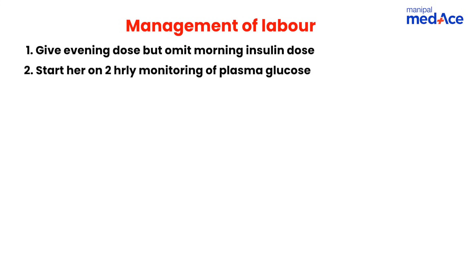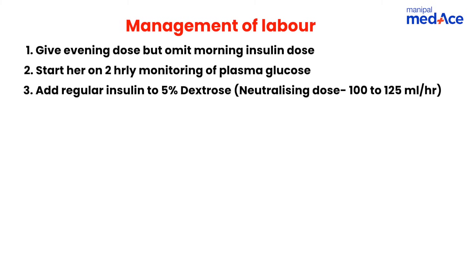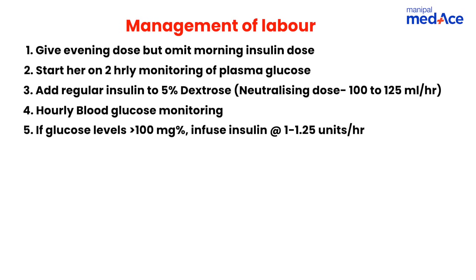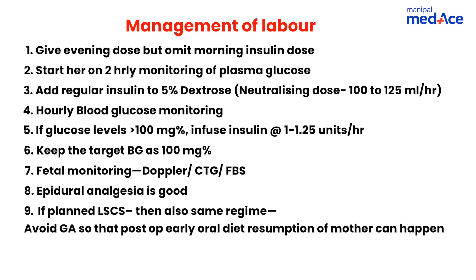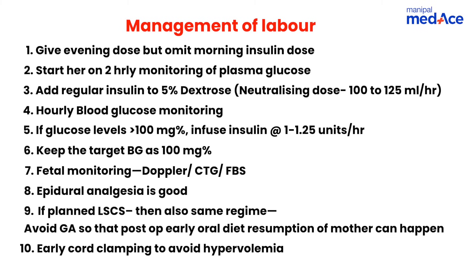For patients in labor, undergoing induction, or elective cesarean section: give the evening dose of insulin but omit the morning dose. Start two-hourly monitoring of plasma glucose. Add regular insulin to 5% dextrose to neutralize it — approximately 100 to 125 ml per hour. If glucose levels are more than 100, infuse insulin at 1 to 1.25 units per hour, targeting blood sugar of 100. Fetal monitoring with Doppler CTG should continue. Epidural analgesia is preferred for normal labor. In planned cesarean, omit the morning insulin dose, perform early cord clamping to prevent hypervolemia in the baby, and avoid general anesthesia — spinal anesthesia is preferred so the patient can resume oral intake as soon as possible.